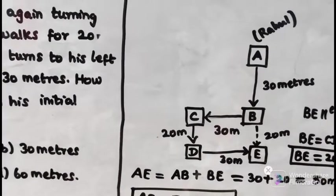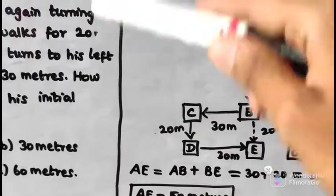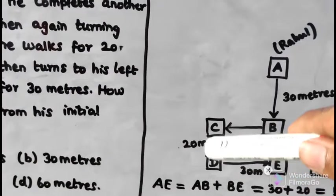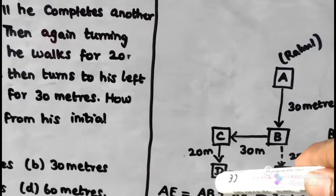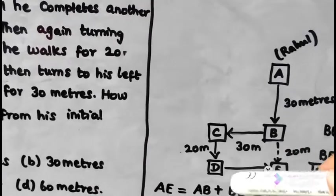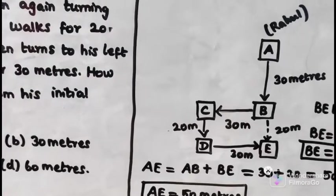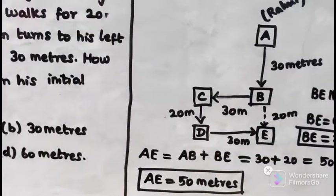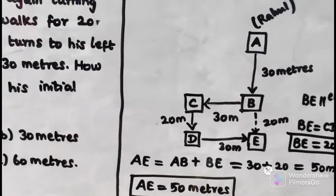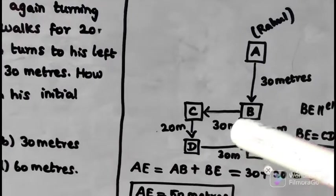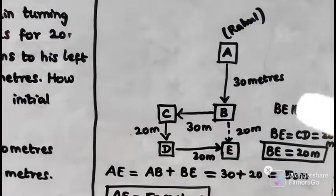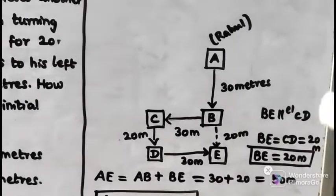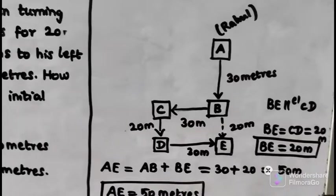From C, left side turn going South 20 meters to point D. Then left side again going East 30 meters to point E. Since CD and BE are parallel and equal, CD equals 30m, so BE equals CD which is 20m.